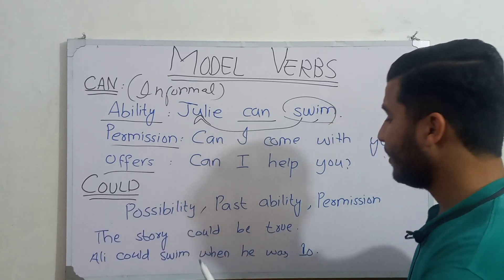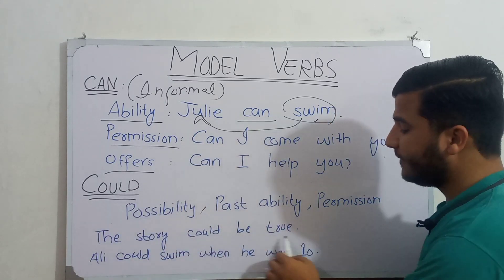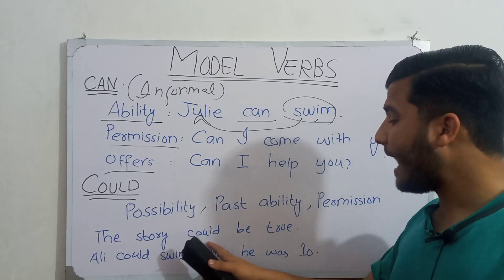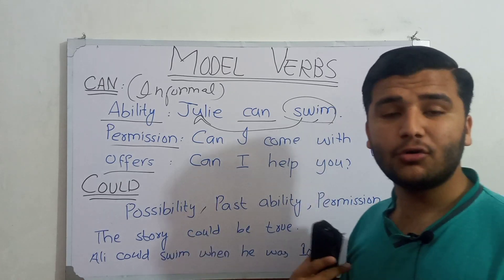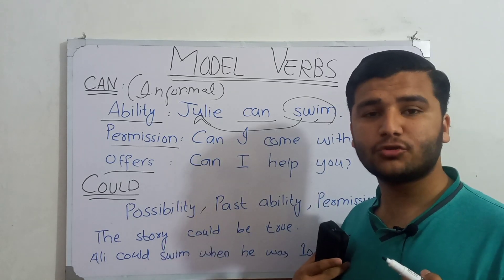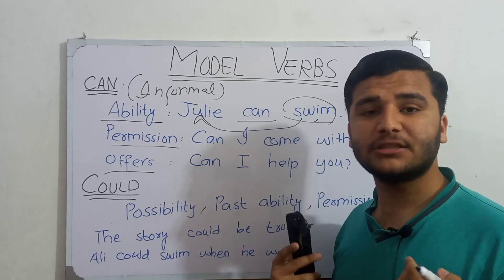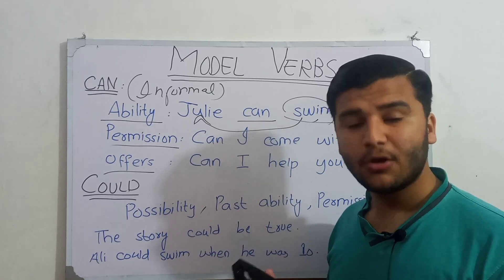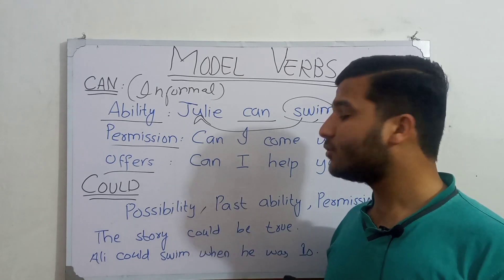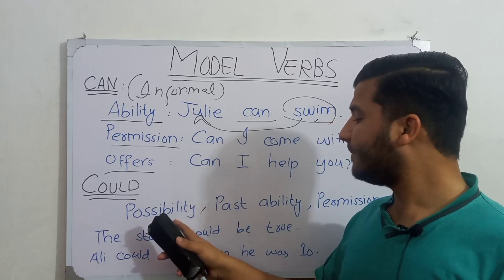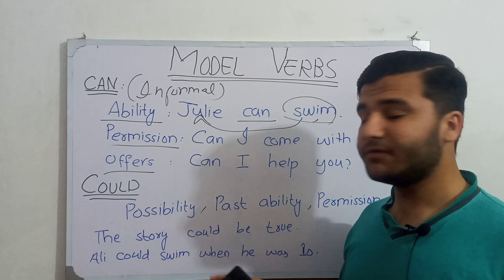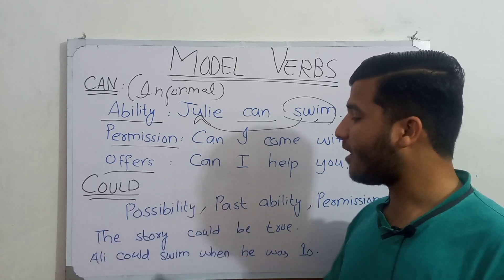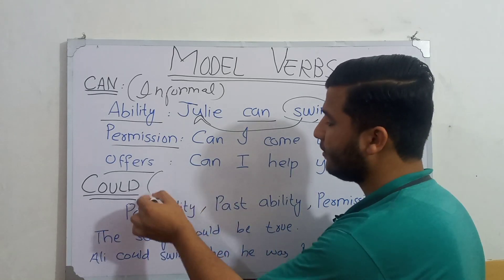For example, 'The story could be true — who knows.' Here I am just predicting; I don't know if the story is true or not, but I am estimating that maybe it is true. No one knows for certain, so for possibility and prediction we use 'could.'